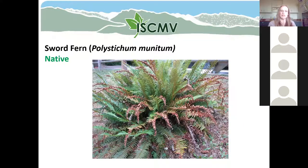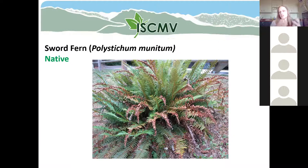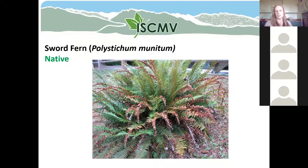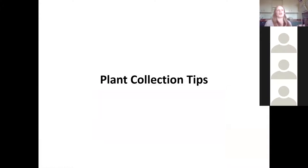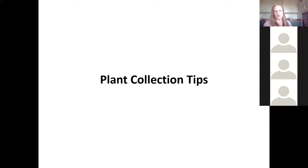Sword fern is one of my very favorite ferns and is really common in Metro Vancouver. It's a lovely native fern that is quite large, growing in big bunches with leaves or fronds coming out from the very center. This plant has been here for many hundreds of years and is utilized by Indigenous peoples with a lot of cultural value and many purposes. Of course, there are hundreds of plants we could cover, but we only have an hour tonight, so I've picked the most common ones you might have seen.